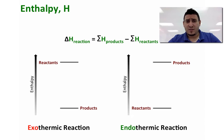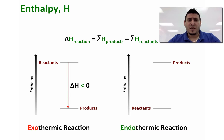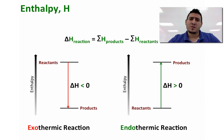In a similar way to the sign of heat, we can discuss the signs of delta H. Delta H of a reaction equals the sum of the enthalpies of the products minus the sum of the enthalpies of the reactants. For an exothermic reaction, the enthalpy of the reactants is higher than the enthalpy of the products, so delta H is negative. For an endothermic reaction, the enthalpy of the products is higher than that of the reactants, so delta H is positive.